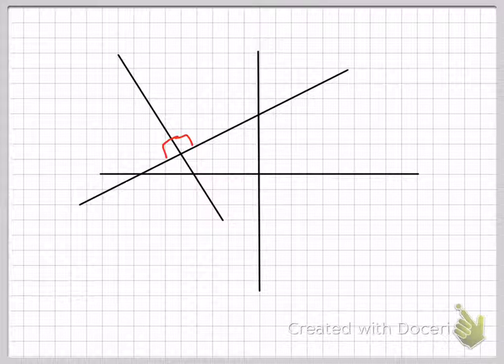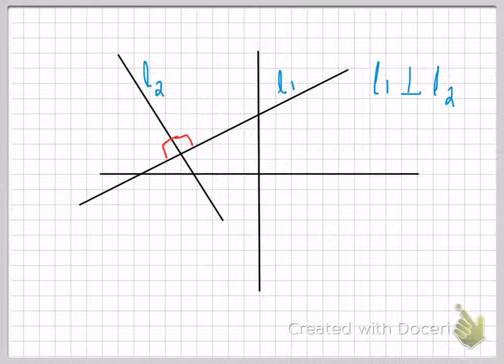If you have two perpendicular lines, that means perpendicular lines meet at 90 degrees. I'll call this L1 and this L2. They are perpendicular. When you have two perpendicular lines, the product of their slopes will be equal to negative one.